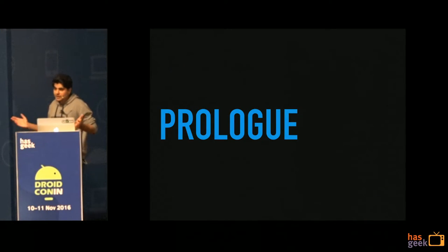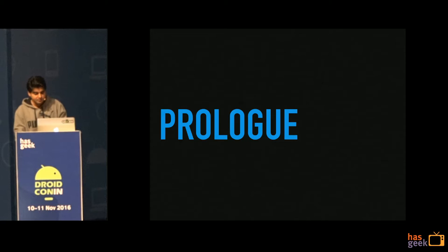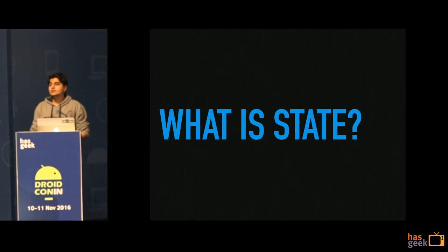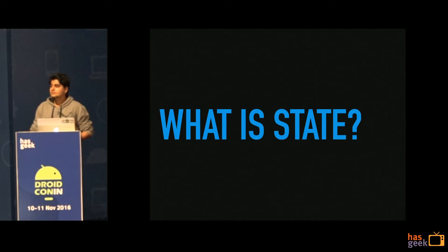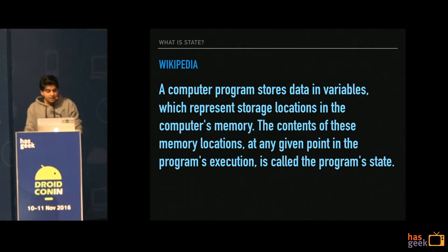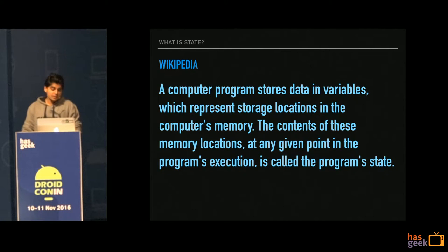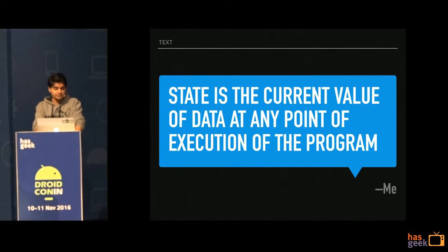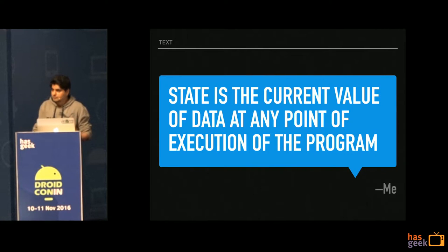So I'm going to tell you a story today, and like all good stories you need a prologue. So what is state? Anybody, shout it out quick. Wikipedia says a computer program stores data in variables which represent storage locations in the computer's memory. The contents of these memory locations at any given point in the program's execution is called the program's state. So this is my definition: state is the current value of data at any point of execution of your program.